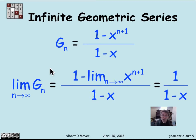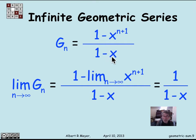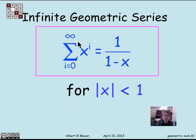The definition of an infinite sum is the limit of the truncated sums — the limit of the sum of the first n terms as n goes to infinity, assuming that limit exists. So the value of this infinite series is the limit of g_n, which is (1 minus x to the n plus 1) over (1 minus x). The limit distributes, and as long as x is less than 1, x to the n plus 1 goes to 0, giving the simple formula: the sum from i equals 0 to infinity of x to the i equals 1 over (1 minus x), provided the magnitude of x is less than 1.